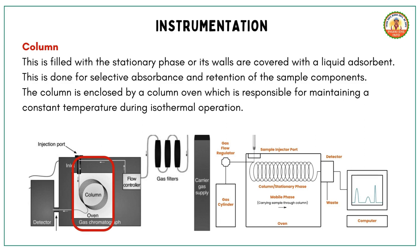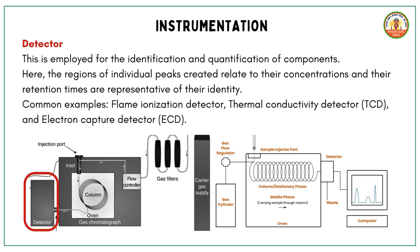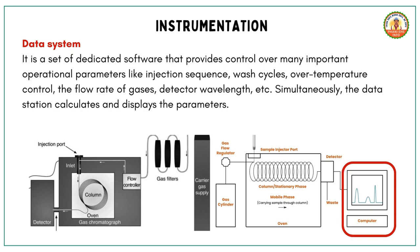The column is maintained at a constant temperature by a column oven during operation. The detector identifies and quantifies components — individual peaks on the chromatogram relate to concentrations, while retention times represent identities. Common detectors include the flame ionization detector (FID), thermal conductivity detector (TCD), and electron capture detector (ECD).